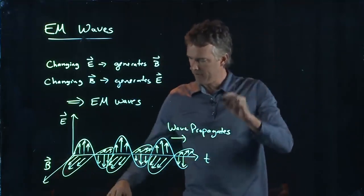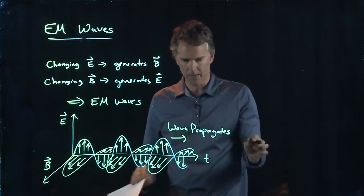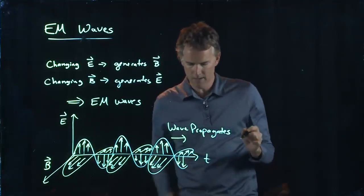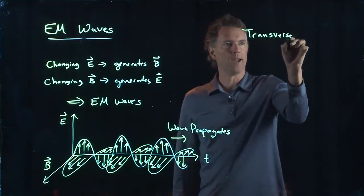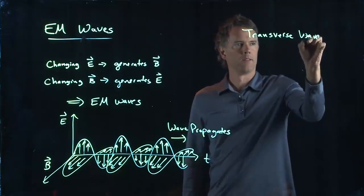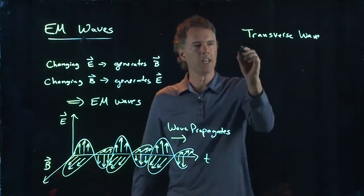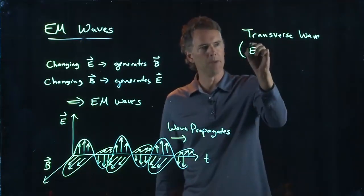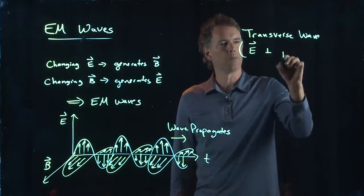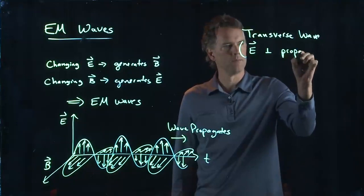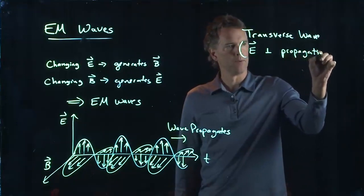So how fast do these things propagate? It is called a transverse wave because the E field and the B field are perpendicular to the propagation direction.